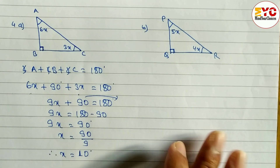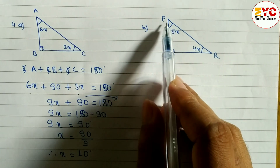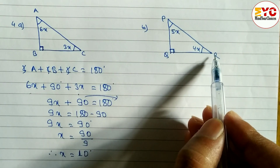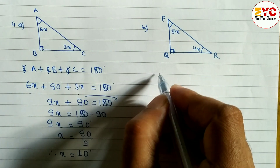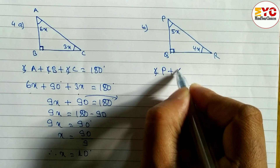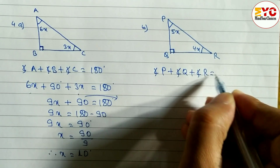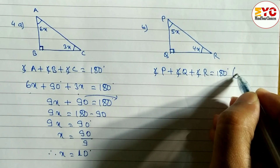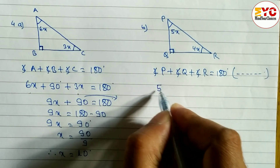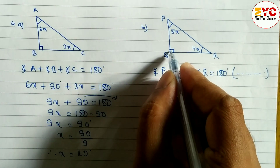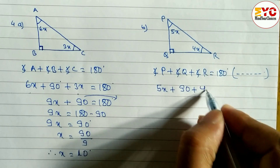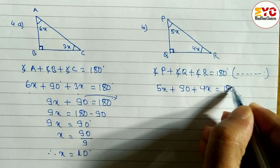Now look at question 4B. Here you can see angle P is equal to 5x, angle Q is equal to 90 degrees because it is a right angle triangle, and angle R is equal to 4x. When you add these three angles we get 180 degrees. So angle P plus angle Q plus angle R is equal to 180 degrees — the sum of angles of a triangle. P is equal to 5x, Q is 90 degrees, and R is 4x, so 4x is equal to 180.